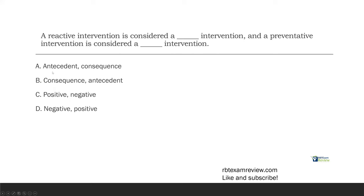So, a reactive intervention is considered a consequence intervention, and a preventative intervention is considered an antecedent intervention. So, if we look at our answer choices, A, antecedent and consequence, not in the right order. C and D are positive and negative. Be careful using these words positive and negative, right? What do they mean in ABA? Positive means we're adding something. Negative means we're taking it away. Remember this. We have antecedent interventions. We have consequence interventions. If it occurs before, it's an antecedent intervention. We're preventing or being proactive. If it occurs after, it's a consequence, and we're being reactive.